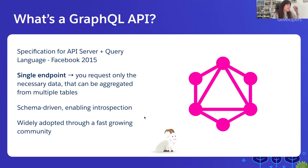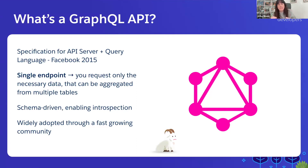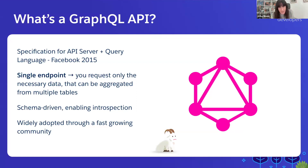In addition, it has a lot of benefits. For instance, it is schema-driven, which means there is an endpoint you can reach to get information about the data model behind the API — similar to an object describe in Salesforce. That allows customers and developers to create tooling, because that tooling can discover by calling the API what's behind it. It's also widely adopted in the third-party developer community.